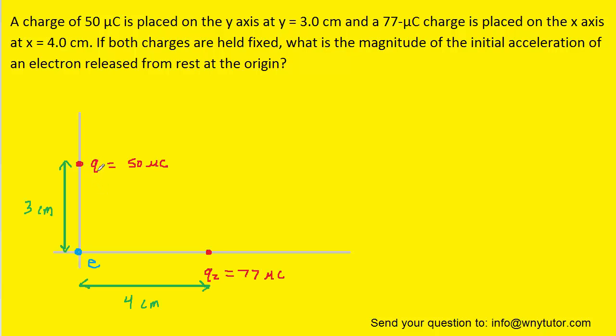We have a charge labeled q1 equaling 50 microcoulombs, located 3 centimeters from the origin on the y-axis. The other charge we've labeled q2, which has a charge of 77 microcoulombs and is 4 centimeters away from the origin.